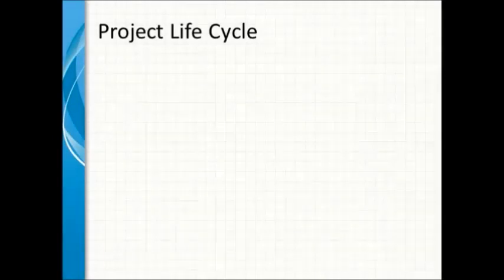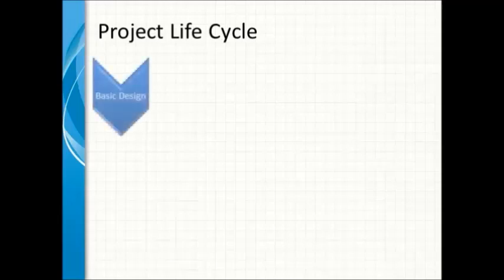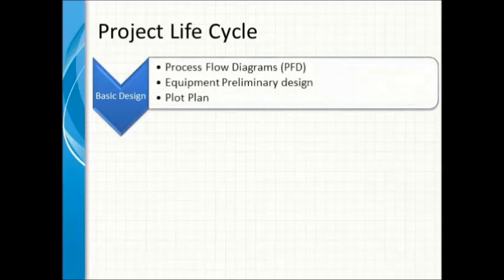Every project starts with an idea. Once they have the idea, they will start to do a feasibility study and make sure the idea is really feasible and worth building — whether it's a petrochemical plant or a refinery. If it is feasible and they decide to move on, they go to the next phase, phase two, called basic design. In basic design, process engineering will put together the outlines for the process and start generating the PFD, or process flow diagrams.